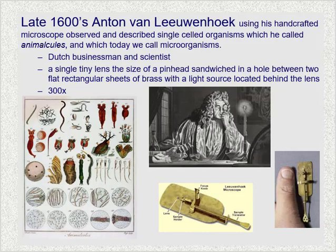By the late 1600s, a Dutch businessman who became interested in science developed the most powerful microscope of that time. His microscope was very simple in design — a single tiny lens about the size of a pin head sandwiched between two flat rectangular pieces of brass with a light source placed behind the lens to illuminate the sample. This microscope was capable of magnifying a sample by 300 times. With it, Van Leeuwenhoek was able to observe the first single-celled organisms, which he called animacules — today we know them as microorganisms.